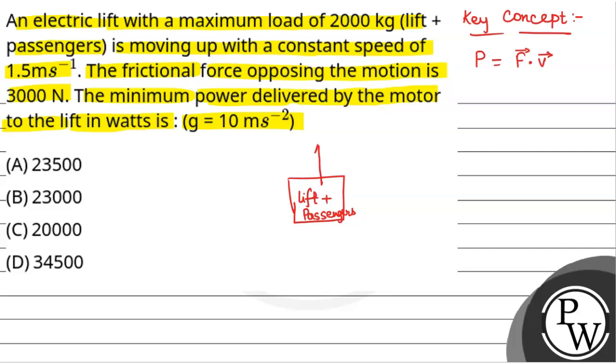Now, if the lift is moving up due to a force F and it has no acceleration, that is, it is moving with a constant velocity, then F will be equal to mg plus f, where mg is the weight of the lift and f is the frictional force.